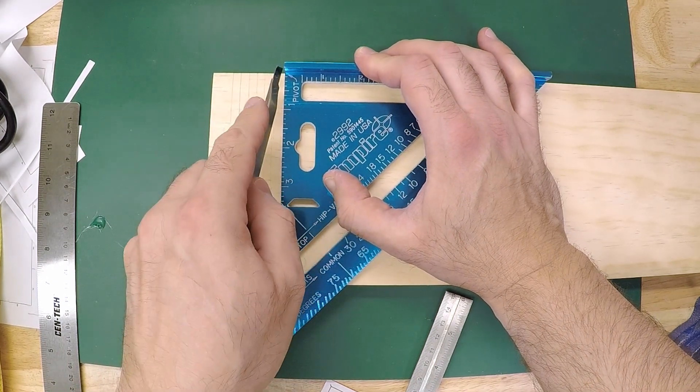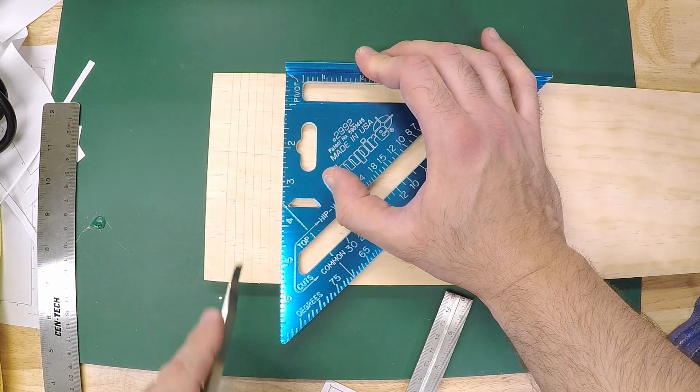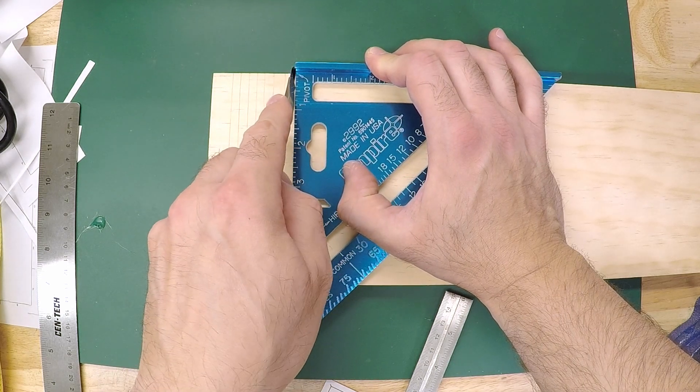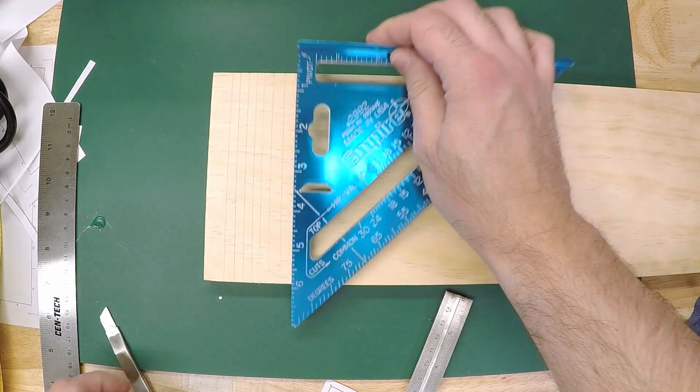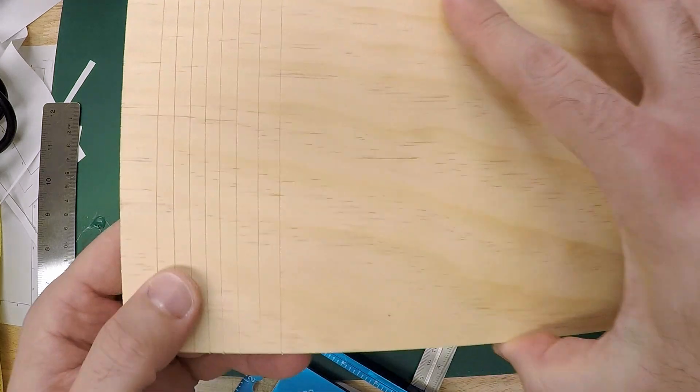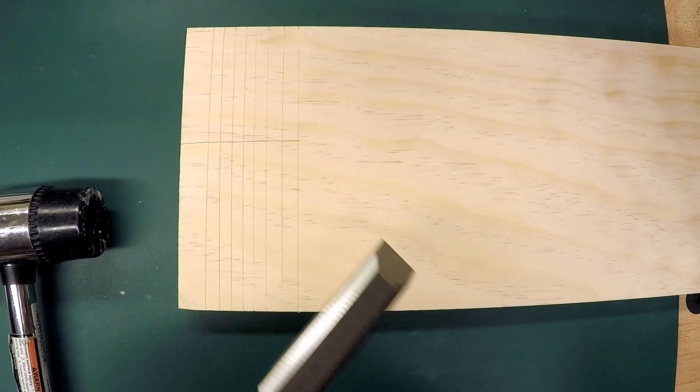This is a speed square. Really whatever tool you have on hand is probably going to work fine for this. Now you can see I've got my lines and it's very clear to see.